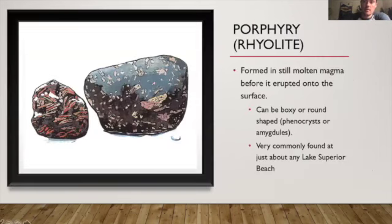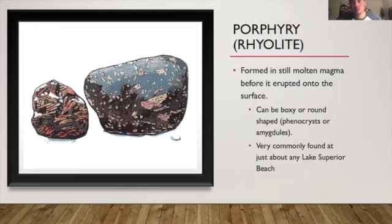Next, we have porphyry or rhyolite. These rocks were formed in still-molten magma before it erupted onto the surface — magma that got trapped underground and over thousands of years slowly cooled down and created these rocks. They're typically dark colored — dark gray or black — typically boxy or round shaped, and they're also very common at Lake Superior beaches.